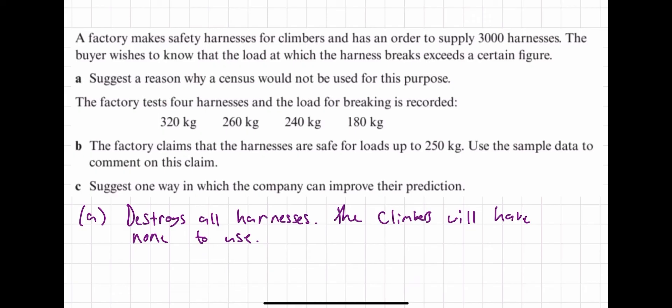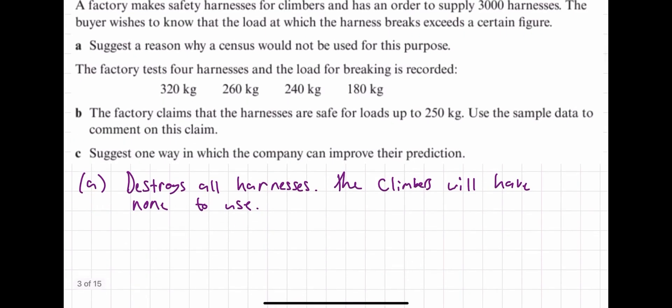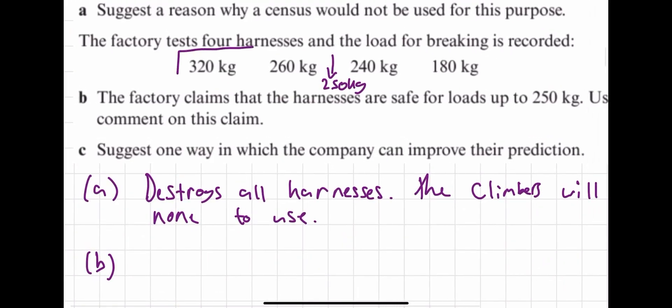And then now part B requires a little bit more thinking. The factory claims that the harnesses are safe for loads up to 250 kilograms. Use the sample data to comment on this claim. Looking at the sample data, I can see that 250 kilograms lies right in the middle. What this means is because the median is 250 kilograms, you would expect half of them to be able to deal with a weight of more than 250 kilograms and half of them to break at a weight of less than 250 kilograms.